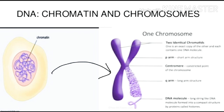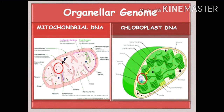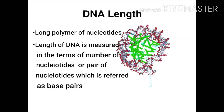Besides the nucleus, another place where DNA is present in eukaryotic cells is in organelles such as mitochondria or plastids, and that DNA is known as organelle DNA. The length of DNA — since DNA is a long polymer of deoxyribonucleotides — is not measured in centimeters or millimeters, but is defined in terms of the number of nucleotides or pairs of nucleotides.